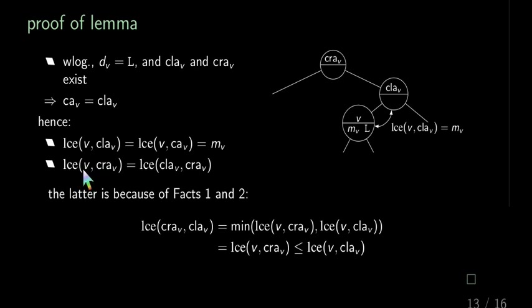For the other case, the LCE between V and cray is equal to the LCE between cray and clay. And to see that, we can now make use of the facts of the previous slide, which state that the LCE between cray and clay is actually the minimum between the LCE of V and cray and the LCE between V and clay. But because we know that DV is set to L, the LCE between V and cray is at most the LCE between V and clay. And because we take the minimum, we know that this minimum has to be this value between V and cray. So we can compute this value by having the cray and clay LCE stored. And this concludes the lemma.